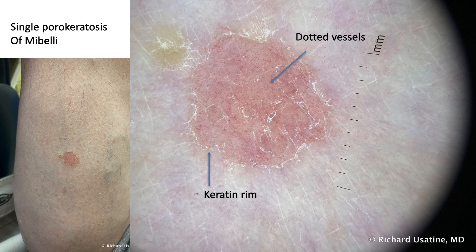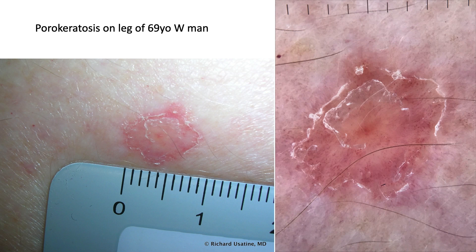The dermoscopic and clinical together make a very fine diagnosis. Here was a porokeratosis on the leg — here it is clinically — showing a very nice keratin rim with some dotted vessels. In this case, you might consider biopsy just to make sure it's not squamous cell carcinoma, which can present with scale and dotted vessels, or Bowen's disease. This one was benign.